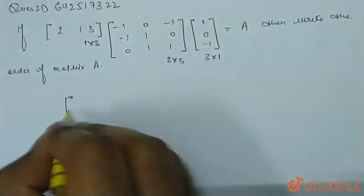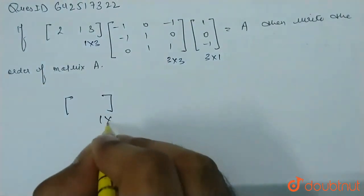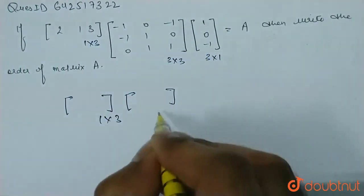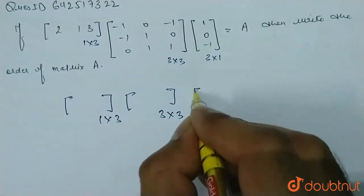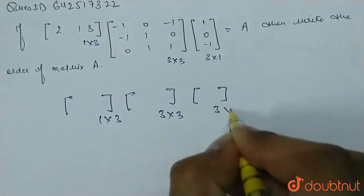So, the first matrix is of the order 1 cross 3. The second matrix is of the order 3 cross 3. And the third matrix is of the order 3 cross 1.